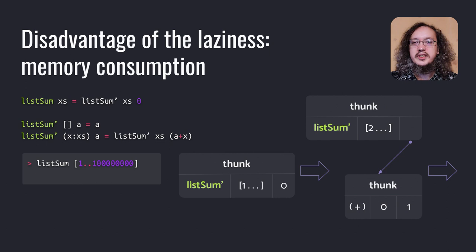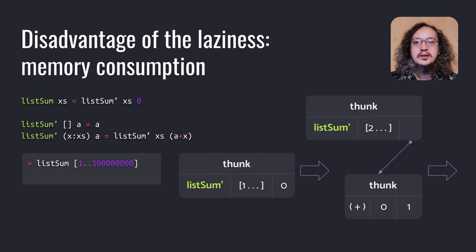For example, let's define a function that gives us a sum of numbers in a list. It sums numbers using an accumulator. How is ListSumPrim reduced if it's applied to a list of numbers from 1 to 100 million? First, a THUNK with the application of the function to the list and 0 is created. When we follow the instruction inside the THUNK, we replace our first application with an application to the list without its head and a sum of 0 and the head of the list.